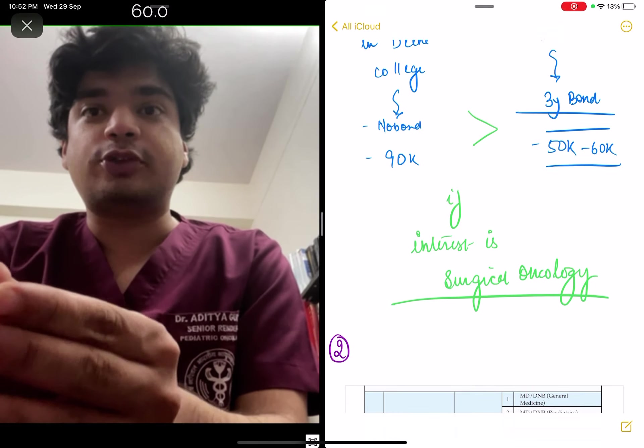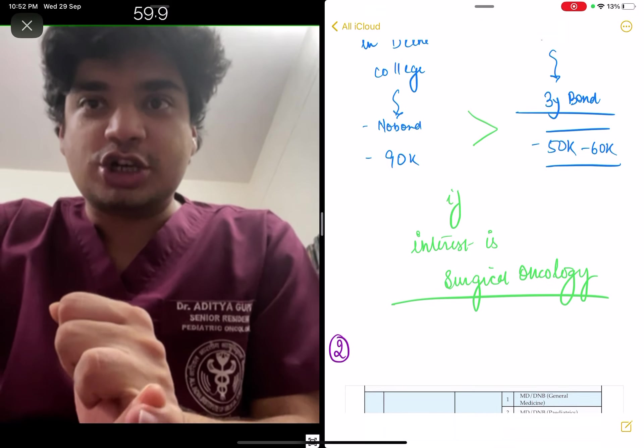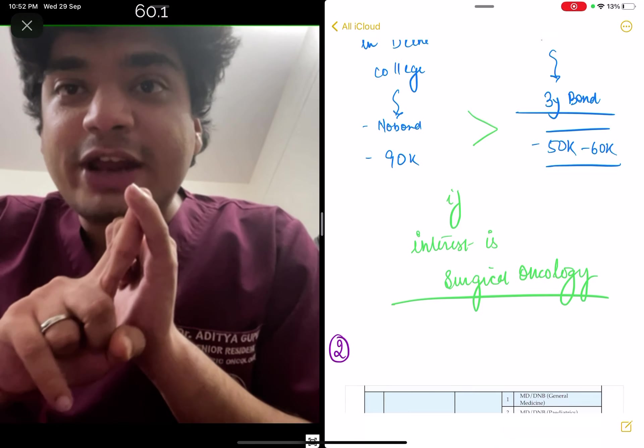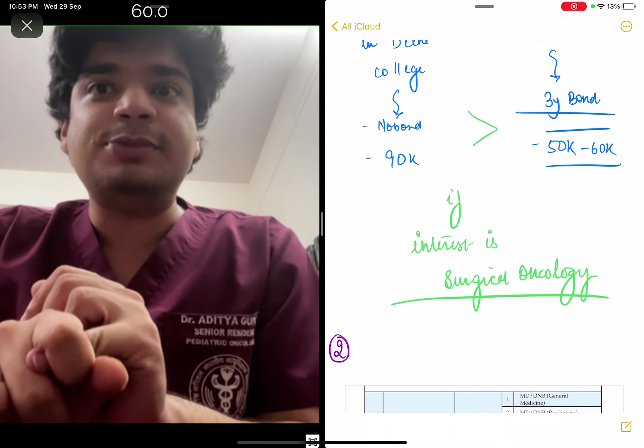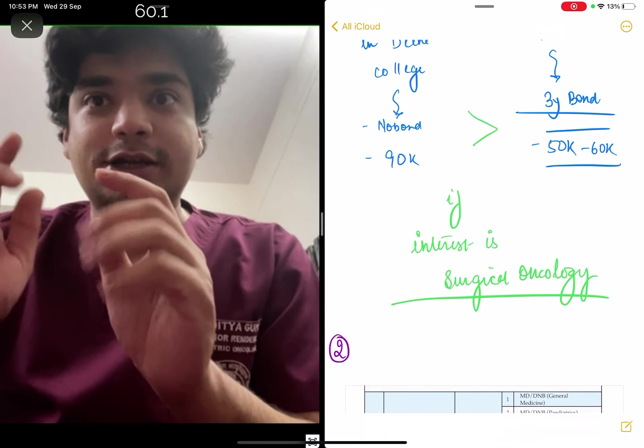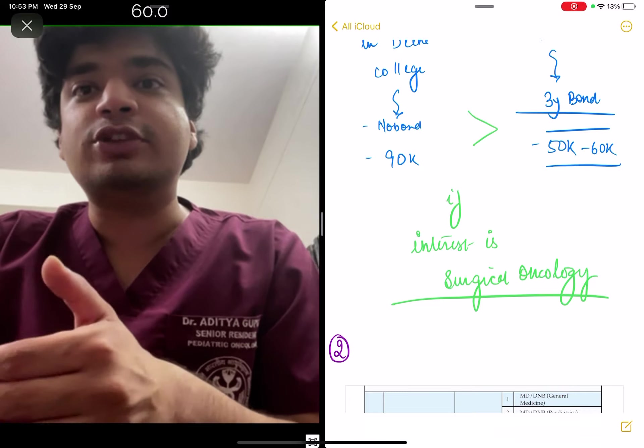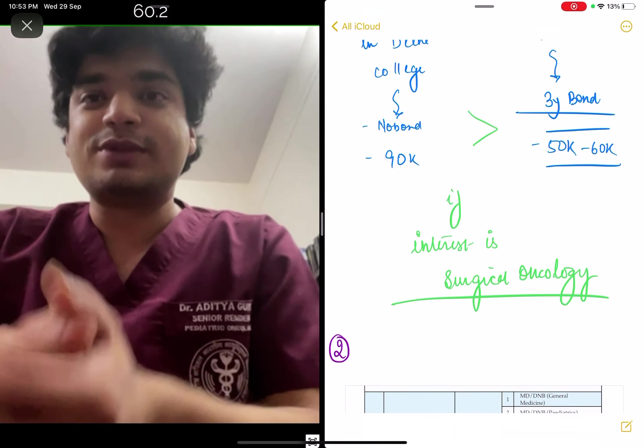Suppose you're getting surgery in a West Bengal college with a 3-year bond and salaries around 60,000, but ENT in a Delhi college has no bond with salaries close to 90,000 to 1 lakh per month. If your ultimate goal is surgical oncology, it makes more sense to do ENT.